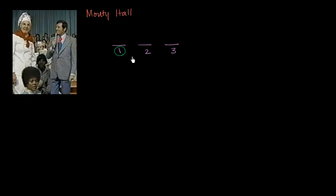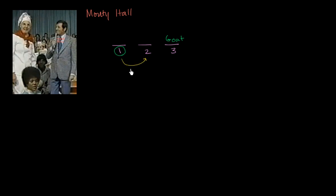No matter which curtain you pick, there will always be at least one other curtain that does not have the prize — there might be two if you picked right, but always at least one. They will show it to you. So let's say they show you curtain number three, and curtain number three has the goat.